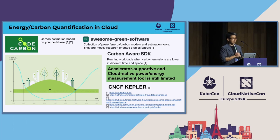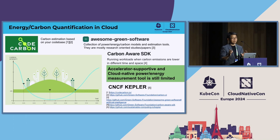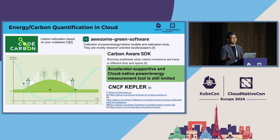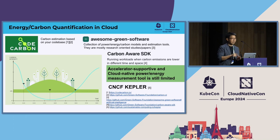For energy and carbon quantification in cloud, there's the Green Software Foundation and other ecosystems developing tools. For example, depending on time of day — when there's a lot of sunlight — carbon intensity decreases significantly. If you use energy during that time, you save a lot of carbon footprint. There are SDKs for that information, and some interesting projects that estimate carbon footprint based on your Python code execution path.